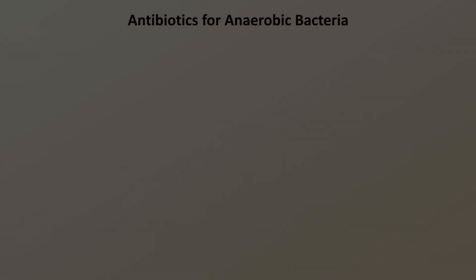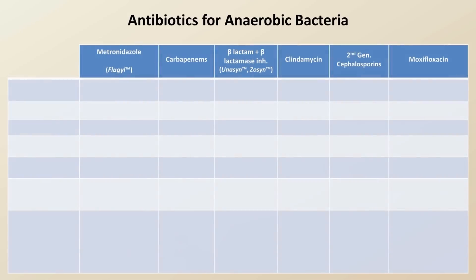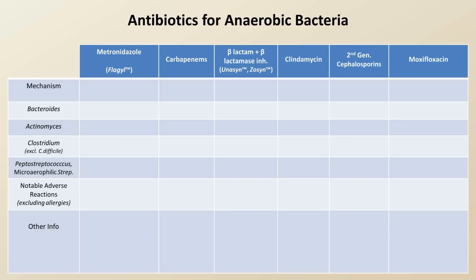So what are the options for antibiotics in these infections? There are essentially just six. As with lectures four and five, as well as the upcoming lecture seven, this chart will review the mechanism, spectrum of activity, notable adverse reactions excluding allergies, and some other info for each category of antibiotic. I've chosen Bacteroides, Actinomyces, non-difficile Clostridium, and the closely related Peptostreptococcus and microaerophilic strep as four representatives of anaerobic bacteria.